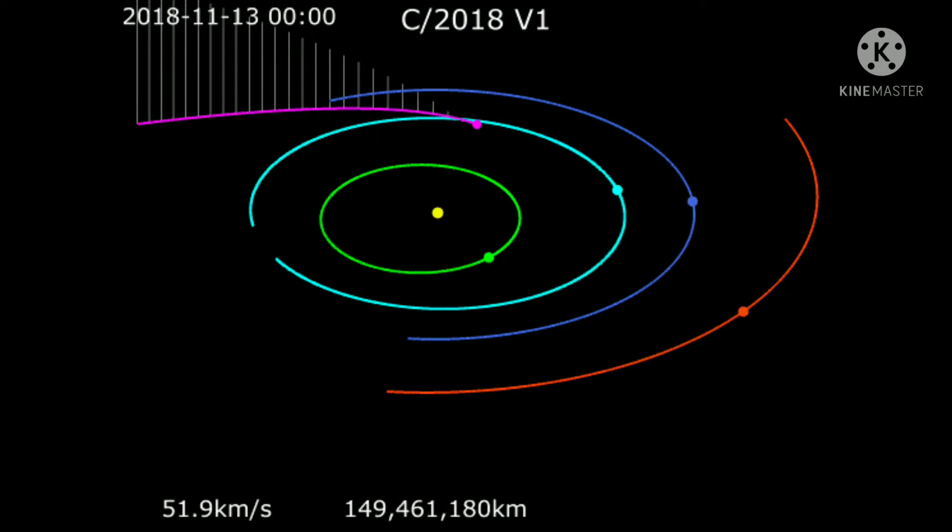The solar system formed 4.6 billion years ago from the gravitational collapse of a giant interstellar molecular cloud. The vast majority of the system's mass is in the sun.